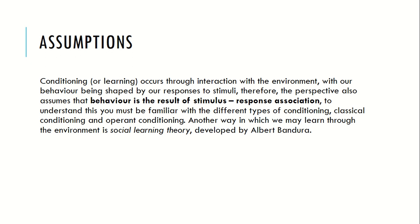All behavior is learned through the environment and conditioning. Conditioning essentially means learning, and it occurs through interaction with the environment — our behavior being shaped by our responses to stimuli, by which we mean variables or things. Behavior is a result of stimulus-response association, and to understand this you need to understand the different ways of learning: operant conditioning, classical conditioning, and social learning theory.